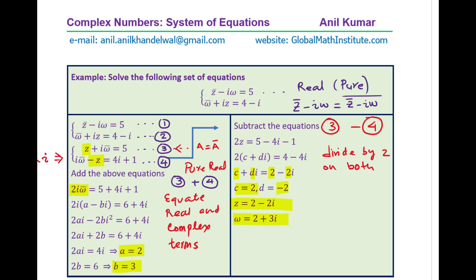To summarize: if the right-hand side is real, then we have a pure real part, and the conjugate of the complex number equals the number itself — this property is key to solving the equation. I hope the steps are clear. Feel free to leave a comment, share your views, and if you like, subscribe to my videos. Thanks for your time and all the best.